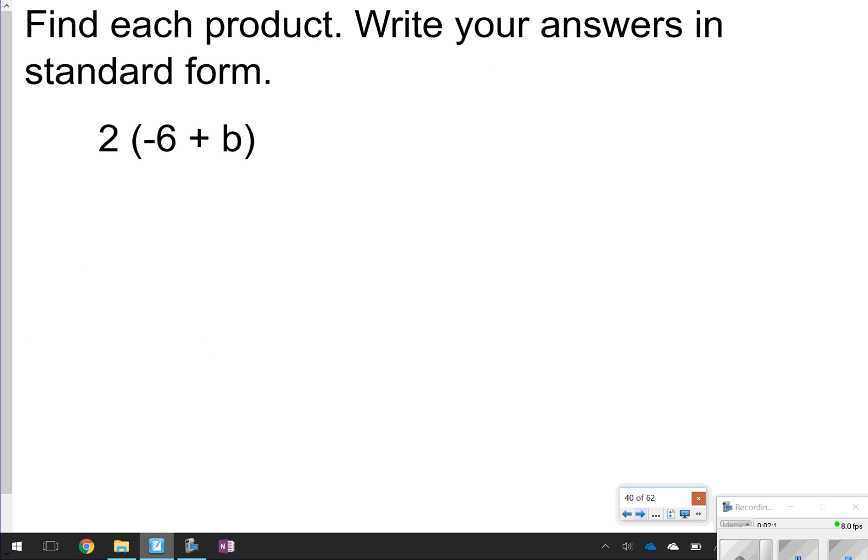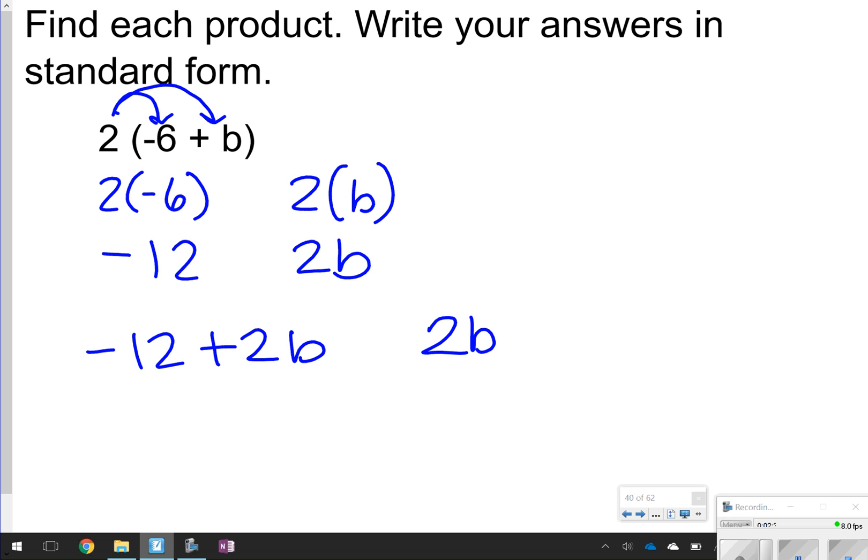In this case, find each product, write your answers in standard form. Again, distribute the number: 2 times negative 6, 2 times positive B. 2 times negative 6 is negative 12. 2 times B is 2B. So you could write your answer as negative 12 plus 2B, but ideally you would want to do it with the variable in front. So 2B minus 12. Either one of those would work though.